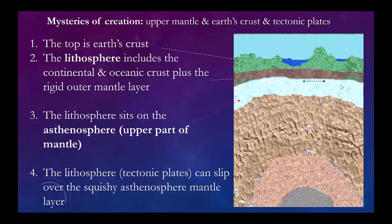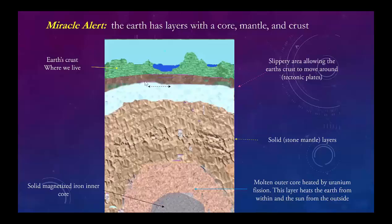The crust and the squishy layer — like molten tar — work together, causing the surface to slip. These are called tectonic plates. The solid part of the Earth initially begins as one block of land, and it will break up over time to make the continents as we know today. This slippage occurs right at the junction of the upper mantle and the crust, creating the tectonic plates that have gone from one big block of land to all the continents we have today.